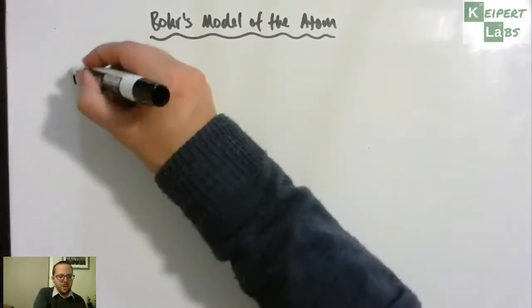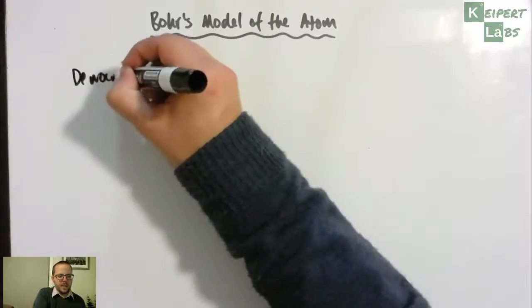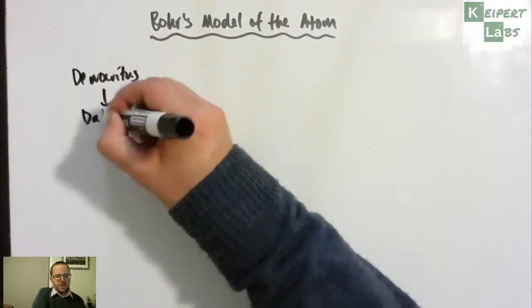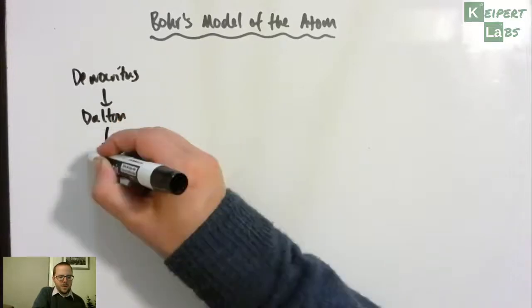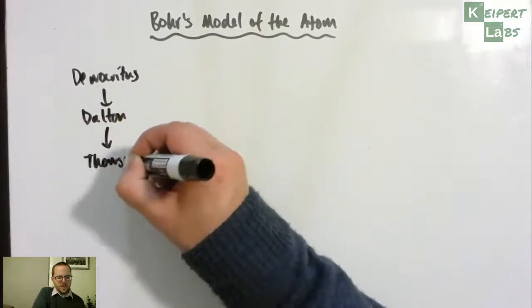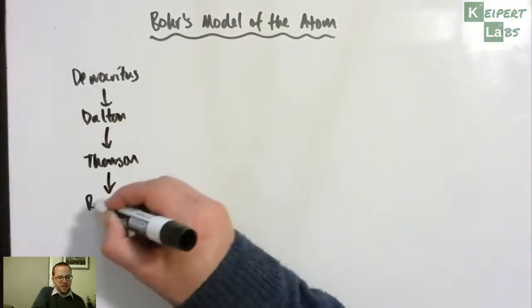So far we've traced the development of ideas from Democritus to Dalton to Thomson and then to Rutherford.